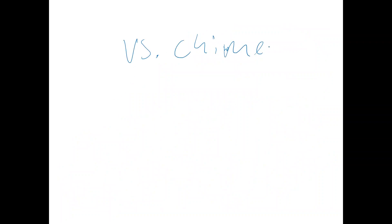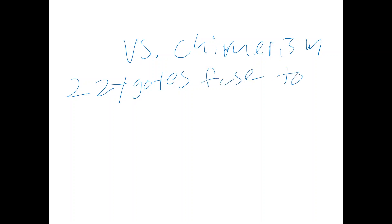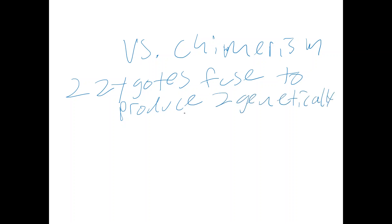Let's go to the whiteboard to compare mosaicism to chimerism. You may encounter this and sometimes people confuse it with mosaicism. Chimerism is where you have two zygotes — two fertilized eggs — that fuse to produce two genetically separate cell lines. Like mosaicism, you have two genetically separate cell lines, but the source is different.